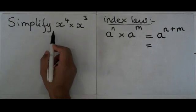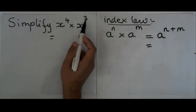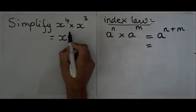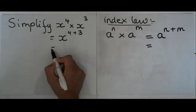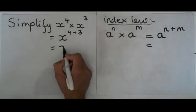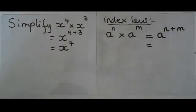So, now if I come back to this question here, x to the power 4 times x to the power 3, is the same thing as having x to the power 4 plus 3, and 4 plus 3 is equal to 7. So my answer is x to the power of 7.